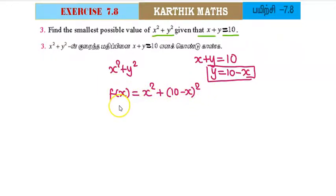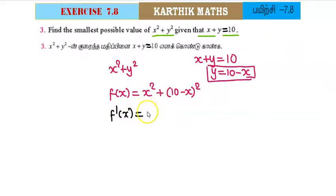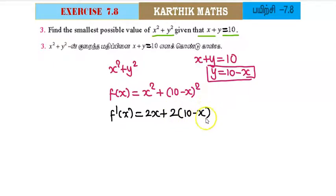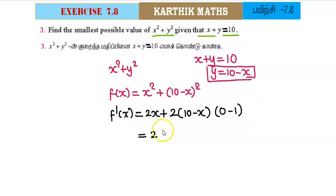We will use the second derivative test to find the minimum value. First, we differentiate f(x). f'(x) equals the derivative of x² plus (10 minus x)², which gives 2 into (10 minus x), times the derivative of (10 minus x), which is 0 minus 1, giving 2.